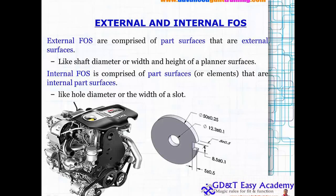If you see this particular element here, this hole is internal whereas the outer ring is an external part. So external FOS are comprised of part surfaces that are external in nature that you can see externally, like shaft diameter or maybe the width of any particular part or maybe height of a particular surface where you can directly reference externally and measure it.